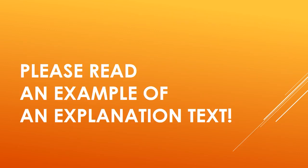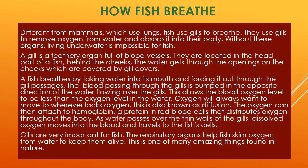Please read an example of an explanation text: 'How Fish Breathe.' Different from mammals which use lungs, fish use gills to breathe. They use gills to remove oxygen from water and absorb it into their body. Without these organs, living underwater is impossible for fish. A gill is a feathery organ full of blood vessels.